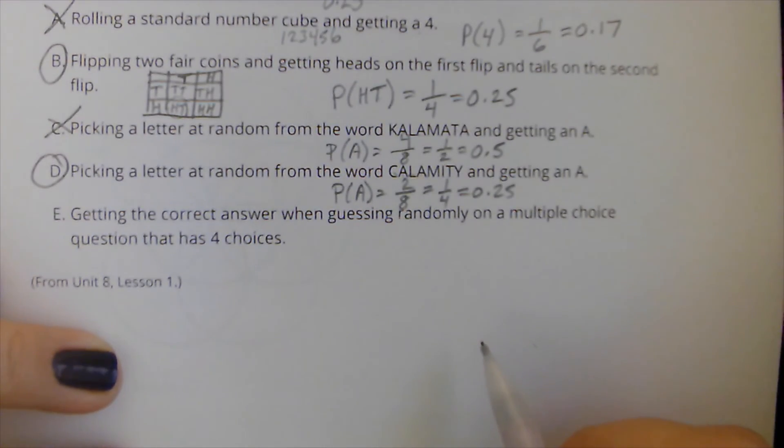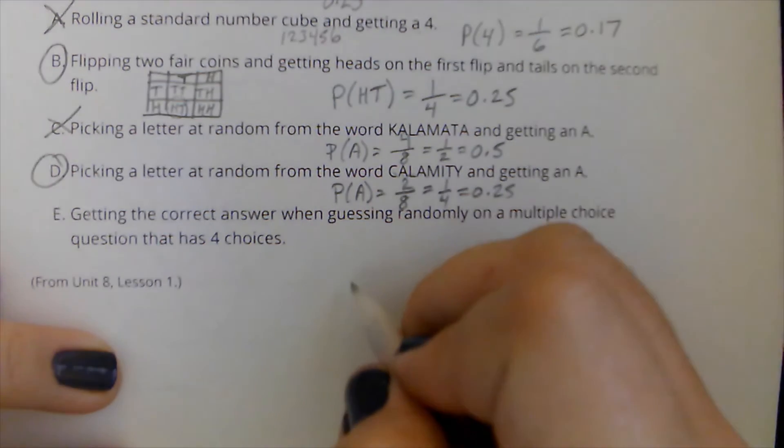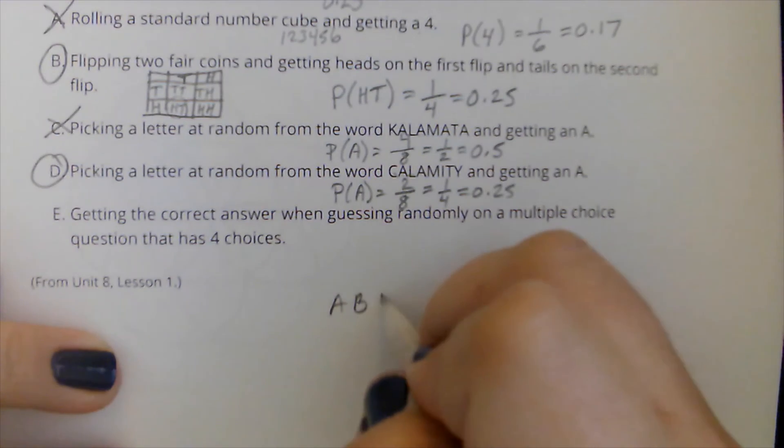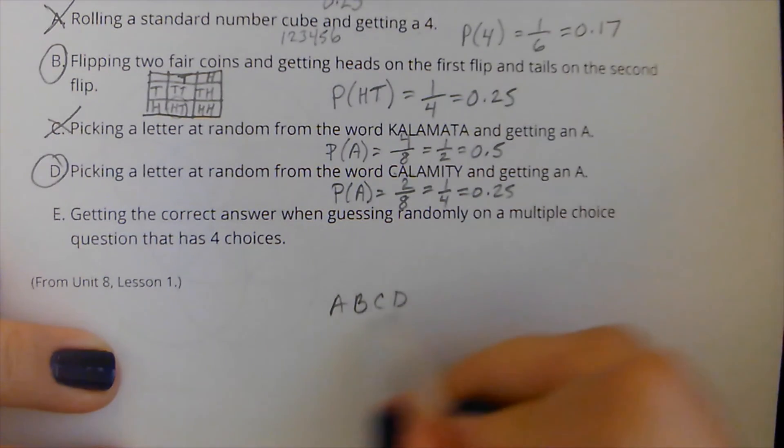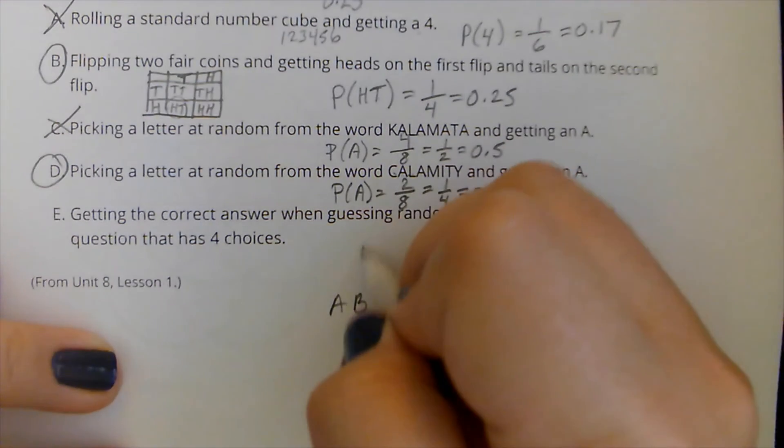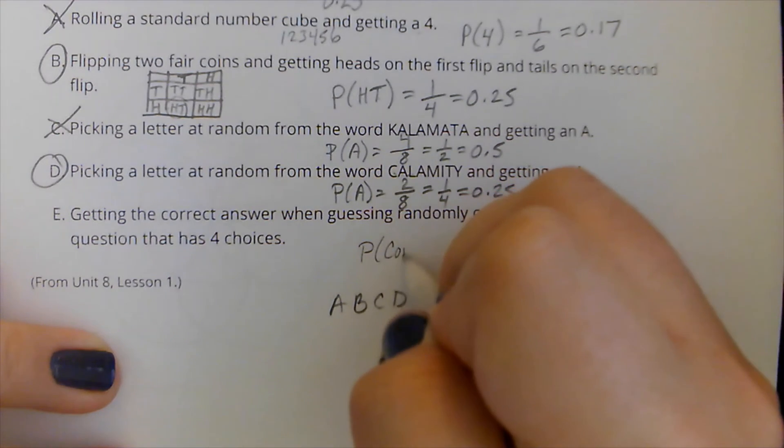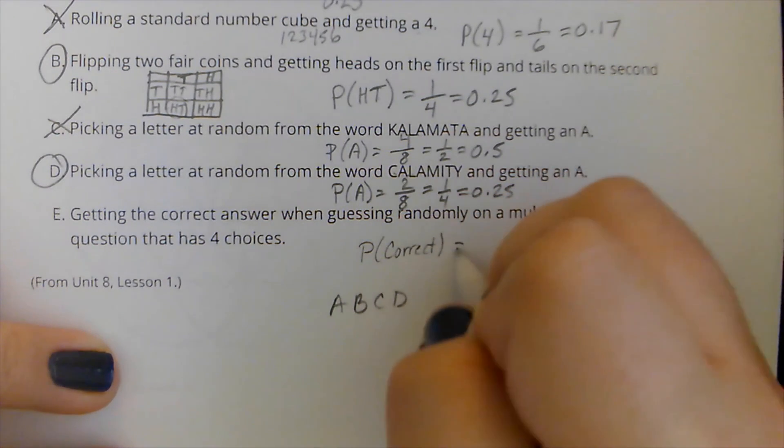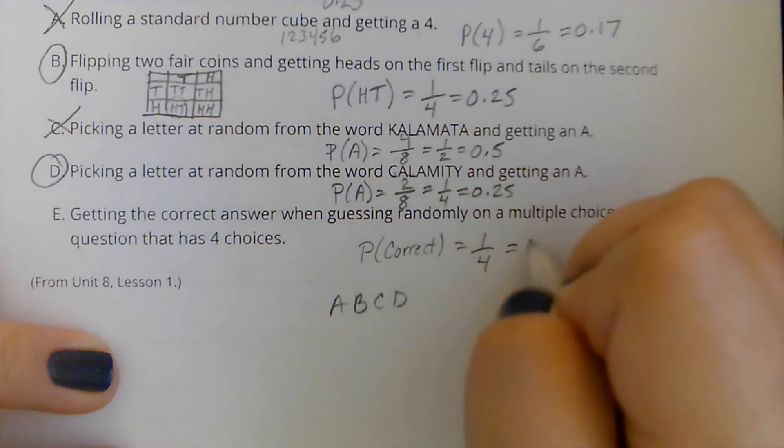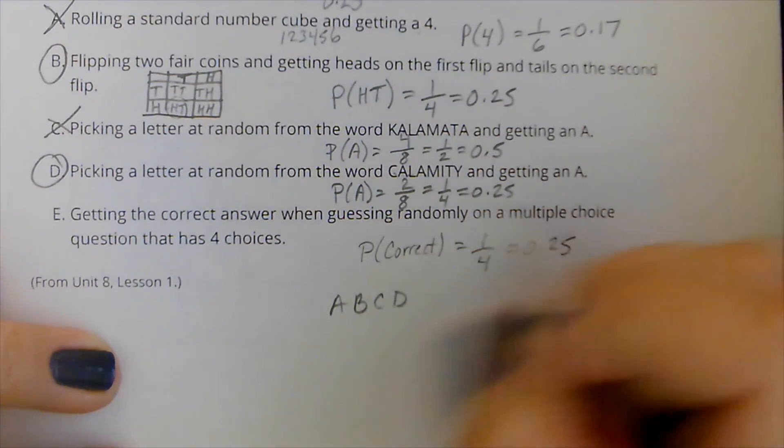And lastly, getting the correct answer when guessing randomly on a multiple choice question that has four choices. So my choices are A, B, C, D. Only one of them is going to be right. So it's one out of four. So the probability of getting it correct is one out of four, which is 0.25. So I want this one also.